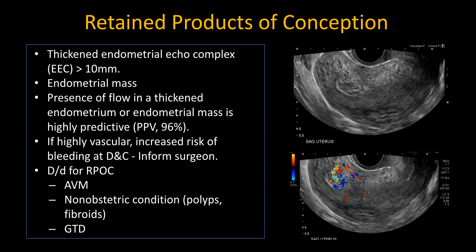On ultrasound, the findings of retained products of conception include a thickened heterogeneous endometrium, usually more than 10 mm. You may see an endometrial mass which is separate from the normal endometrium. In this case, there is normal endometrium towards the periphery and an ill-defined echogenic mass. On Doppler, there is vascularity. Presence of flow in a thickened endometrium or an endometrial mass in a postpartum patient or in a patient who had early pregnancy failure presenting with bleeding would suggest retained products of conception.